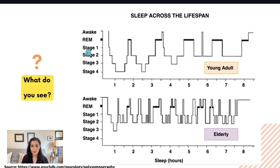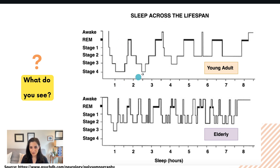Here is an example of a hypnogram in a young adult on top and an older adult on the bottom. You'll see that cycling of sleep we just looked at — more deep sleep in the first half, more REM sleep in the second half, and brief awakenings. You'll notice stages three and four listed here — that's an old classification. Sleep used to be broken down into four non-REM stages, but now stage four is bundled into stage three, so we just call it stage three.